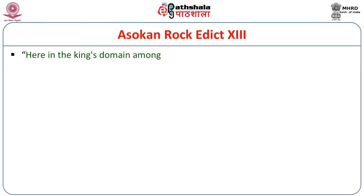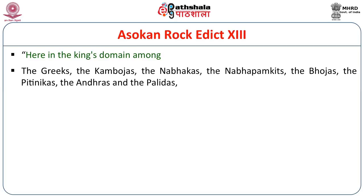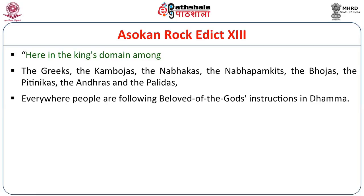In Rock Edict 13, the text reads: here in the king's domain among the Greeks, Kambojas, the Nabakas, Nabamkittis, the Bojas, Pithinikas and the Andras and Palidas, everywhere people are following the Beloved of God's instructions in Dhamma. He mentions 'in king's domain,' meaning these communities and territories were under Ashoka's control. From this, we can clearly understand that the territory of South Asia up to the northern part of Tamil Nadu and the northwestern part of India was under Ashoka's control.